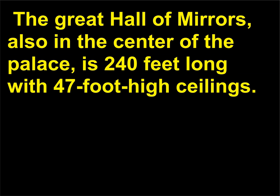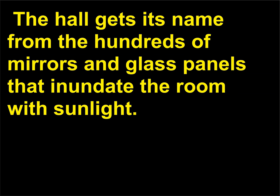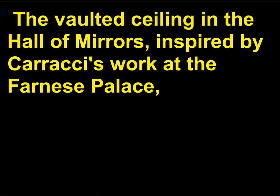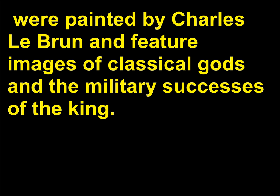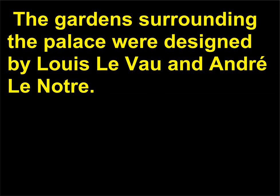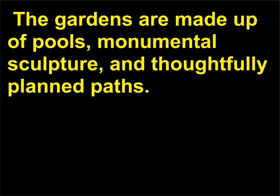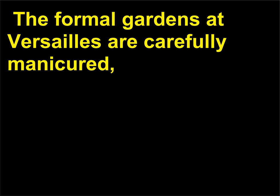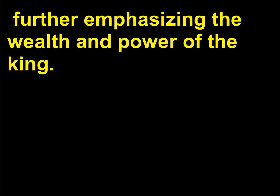The great Hall of Mirrors, also in the center of the palace, is 240 feet long with 47-foot high ceilings. The hall gets its name from the hundreds of mirrors and glass panels that inundate the room with sunlight. The vaulted ceiling in the Hall of Mirrors was painted by Charles Le Brun and features images of classical gods and the military successes of the king. The gardens surrounding the palace were designed by Louis Le Vau and André Le Nôtre, and are made up of pools, monumental sculpture, and thoughtfully planned paths. The formal gardens at Versailles are carefully manicured, further emphasizing the wealth and power of the king.